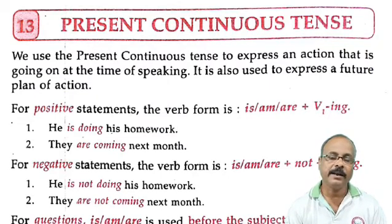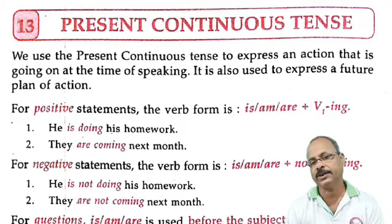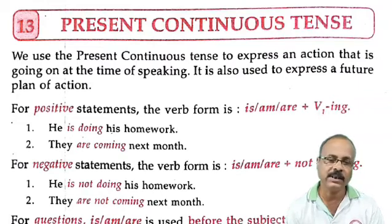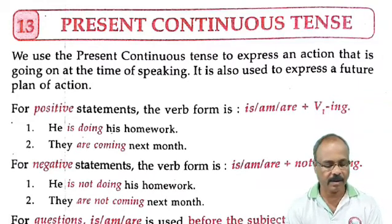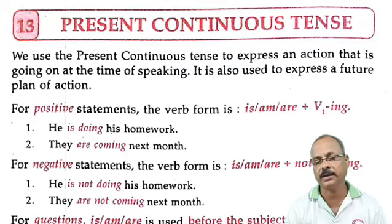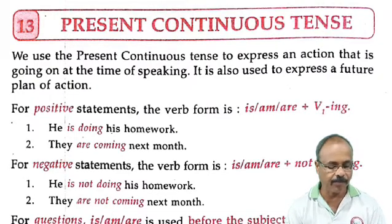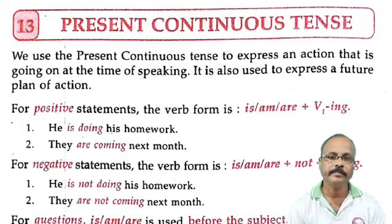For negative statements, the verb form is AM/IS/ARE plus NOT plus V+ING. For example: 'He is not doing his homework.' Another example: 'They are not coming next month.'